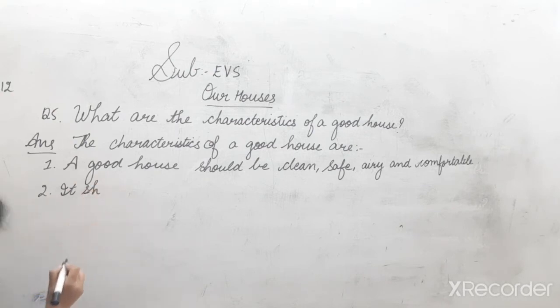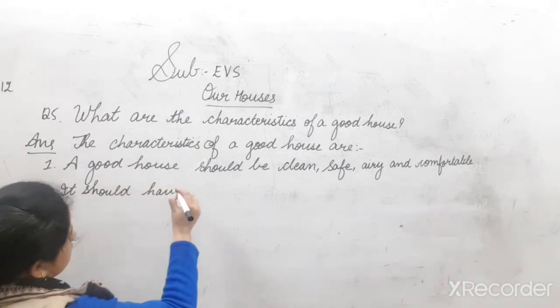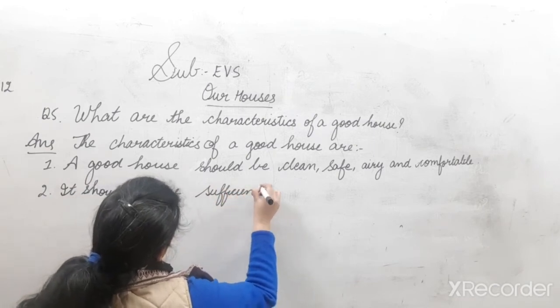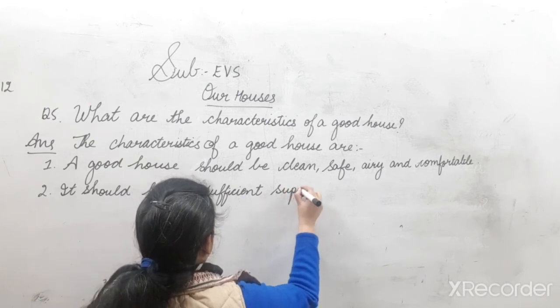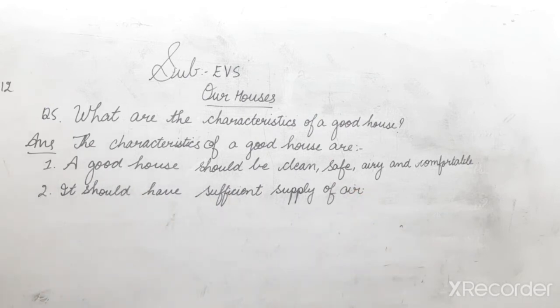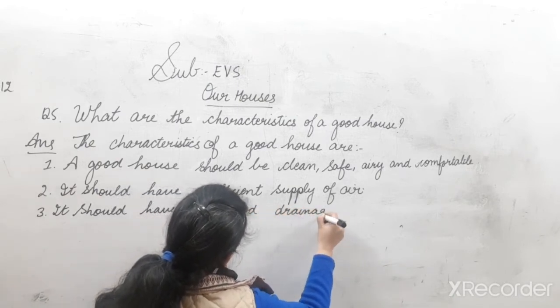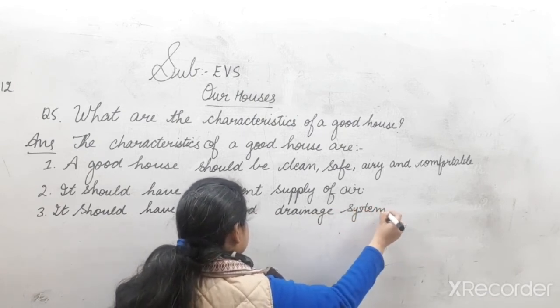Second, it should have sufficient supply of air. Your house should be airy that fresh air should come into your rooms through the windows and doors. It should have a good drainage system.